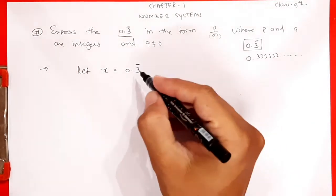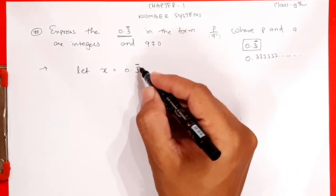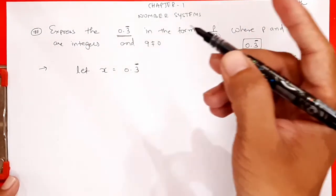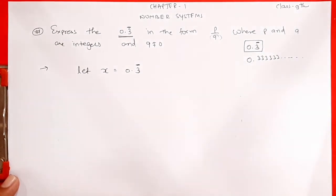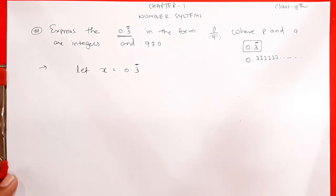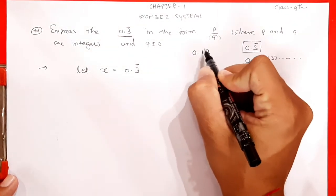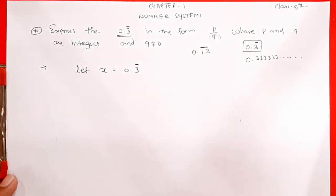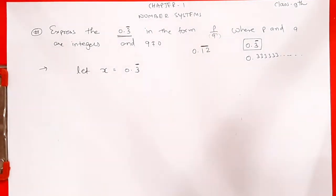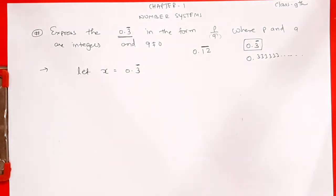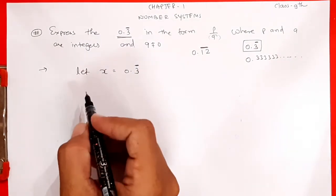Ek cheez yaad rakhna: jitne digits ke upar bar ho, utne zeros se dono side multiply karenge. Yahan par ek digit ke upar bar hai toh 10 se multiply karenge. Agar 0.12 bar hota — dono digits par bar — toh 100 se multiply karte. Teen digits par bar hota toh 1000 se karte. Toh yahan dono taraf 10 se multiply karenge.